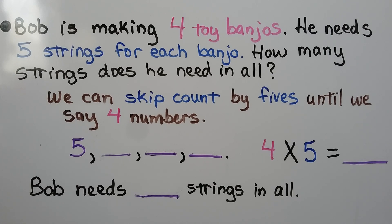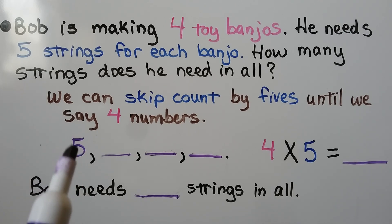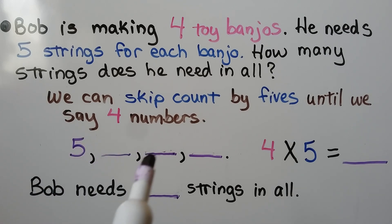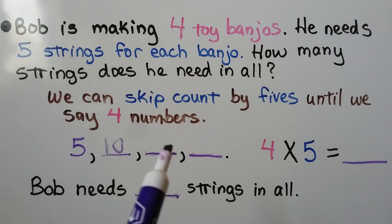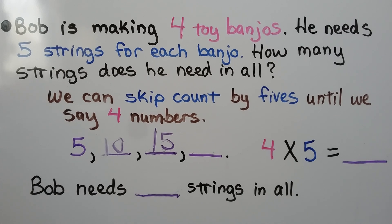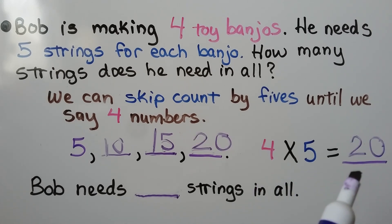Bob is making 4 toy banjos. He needs 5 strings for each banjo. How many strings does he need in all? We can skip count by 5s until we say 4 numbers, because there are 4 toy banjos each getting 5 strings. Skip counting: 5, 10, 15, 20. So 4 times 5 is equal to 20, and Bob needs 20 strings in all.